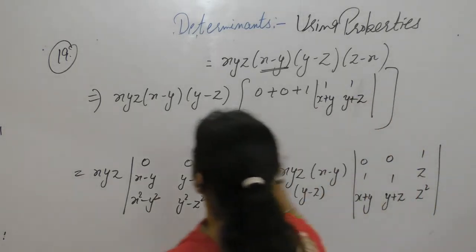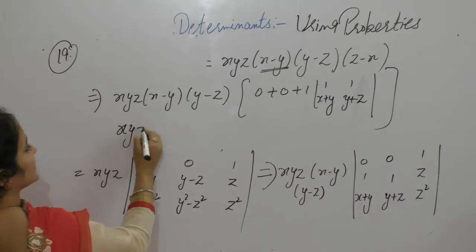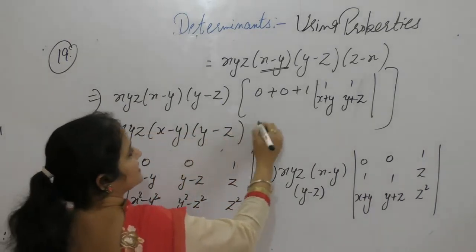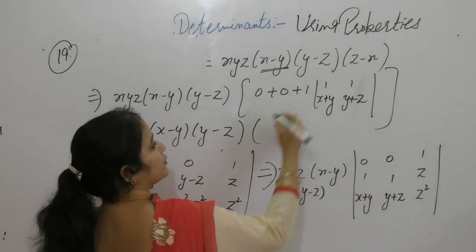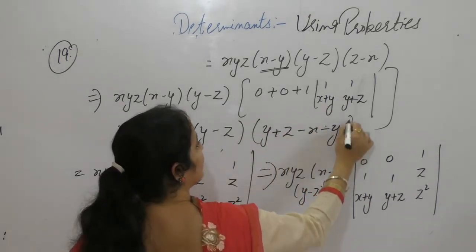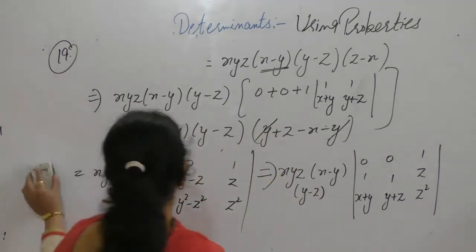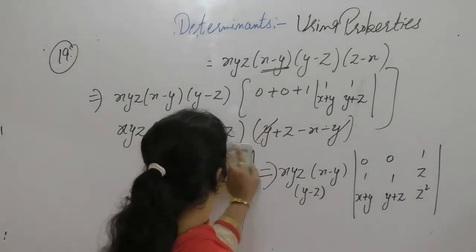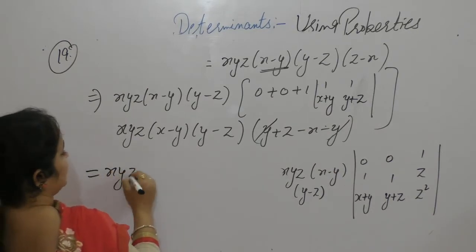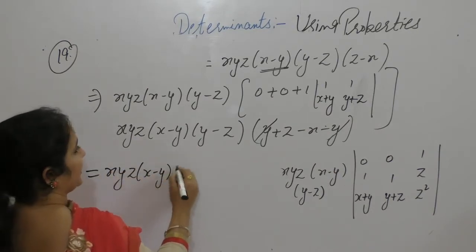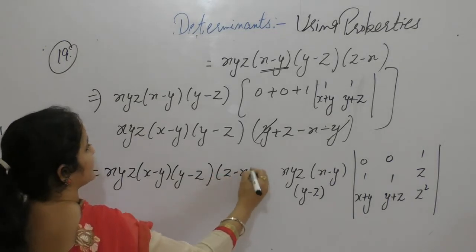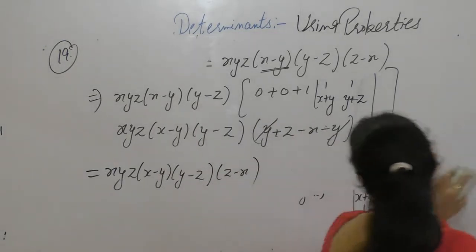Now expand it: x, y, z times (x minus y)(y minus z), and 1 into this minus 1 into (x plus y). The y terms cancel, so we are left with z minus x. Therefore the result is x·y·z·(x minus y)·(y minus z)·(z minus x). That is part of how to prove.